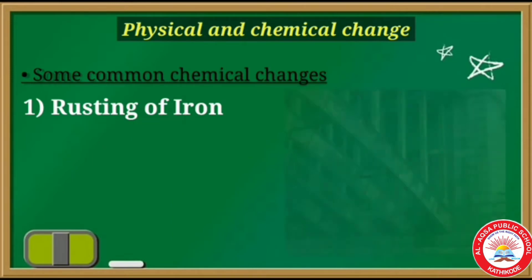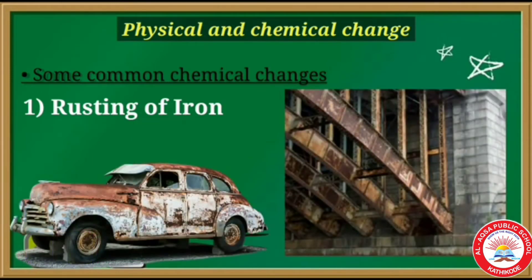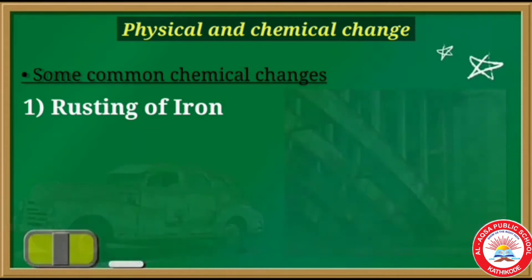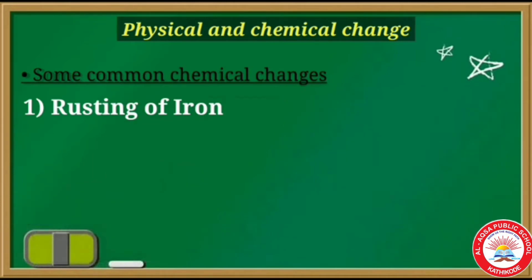For rusting, the presence of both oxygen and water is essential. Here you can see rusting of iron in different objects like cars, bridges, etc.